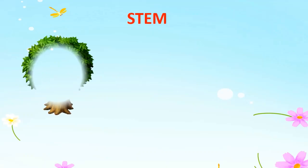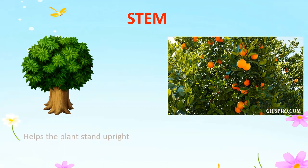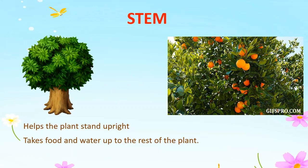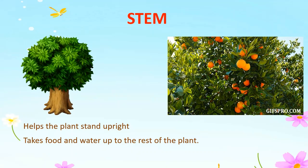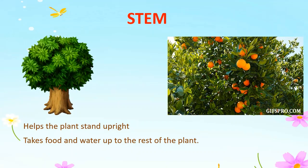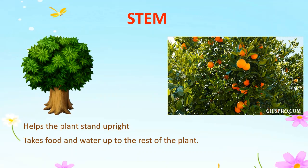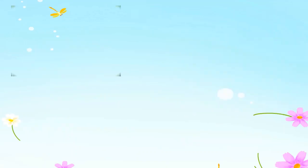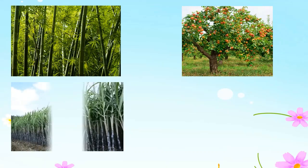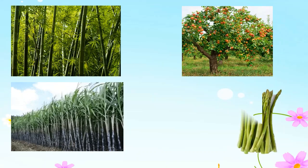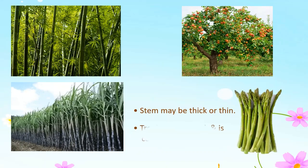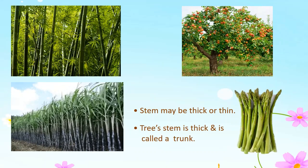The next part of a plant is the stem. Stems are the support system of the plant. They help the plant to stand upright and connect the branches and leaves to the roots. Stems also carry water and minerals from the roots to all other parts of a plant. Stems can be green or brown and can be either thick or thin. A plant stem is thin, whereas a tree's stem is thick and is called a trunk. The stem of some plants is edible — for example, asparagus, sugarcane, ginger and potato.